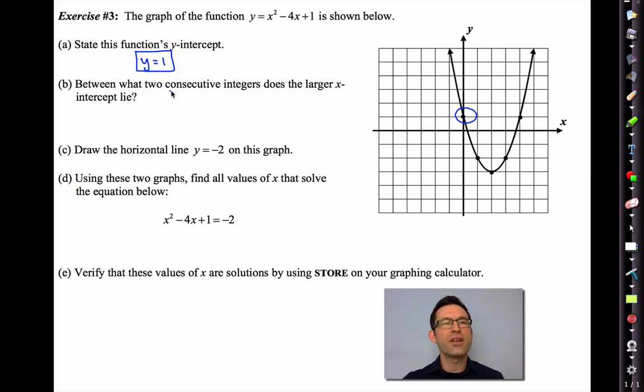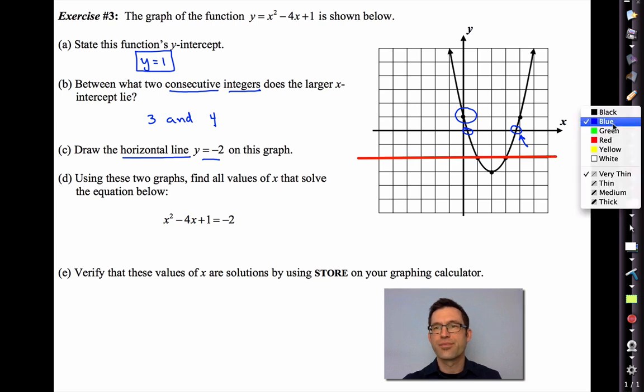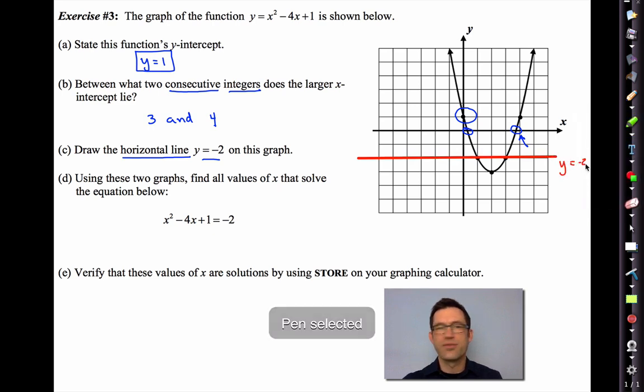Between what two consecutive integers, consecutive means right in a row, integers, whole numbers, does the larger x-intercept lie? Well, here's an x-intercept and here's an x-intercept. This is the larger one. So that must lie between 3 and 4. Letter C. Draw the horizontal line y equals negative 2 on this graph. There it is. That's y equals negative 2.